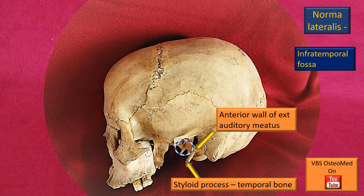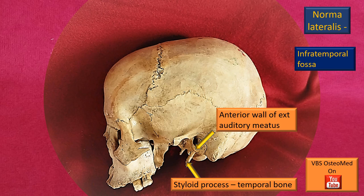Right below and behind the articular tubercle, the mandibular fossa is seen as a circled region — that is where the condyle of the mandible fits to form the temporomandibular joint. Forming the posterior wall of this fossa is the tympanic plate, which is also the anterior wall of the external auditory meatus, meaning the tympanic plate separates the external acoustic meatus from the mandibular fossa. Right below is a small horn-like projection — actually there are two, one on either side — that is the styloid process, a part of the temporal bone.